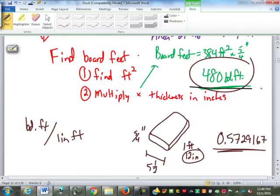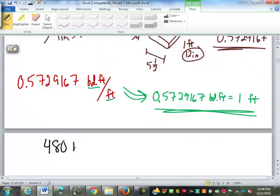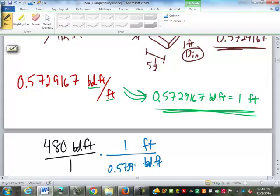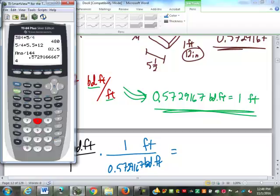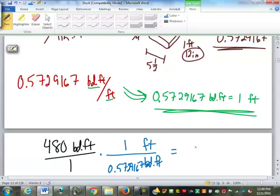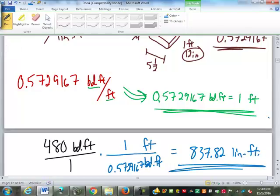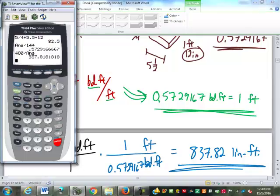And we said we needed 480 board feet. So if I write down my 480 board feet, which I found just by using a volume, I can use this conversion factor. What has to go on, what units has to go on bottom here? Board feet. We're changing into linear feet. This is, one linear foot is 0.57291667 board feet. Now, my calculator, I'm going to make my calculator do the work rather than punching that in. So I'm going to type in 480 divided by that previous answer. 837.82 linear feet. So I'd probably order 840, well, probably 850 linear feet just because you're going to mess up one point somewhere, right?